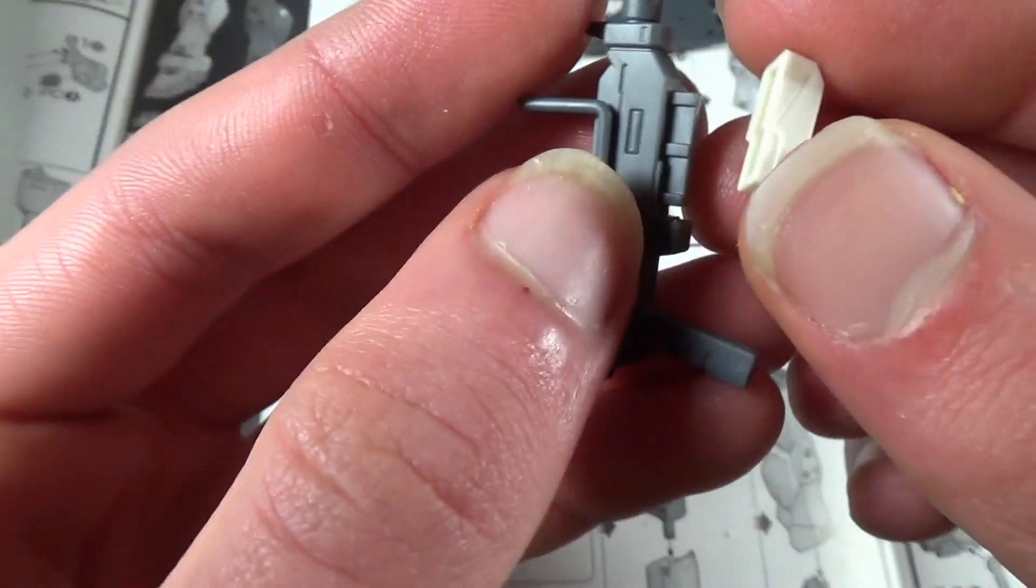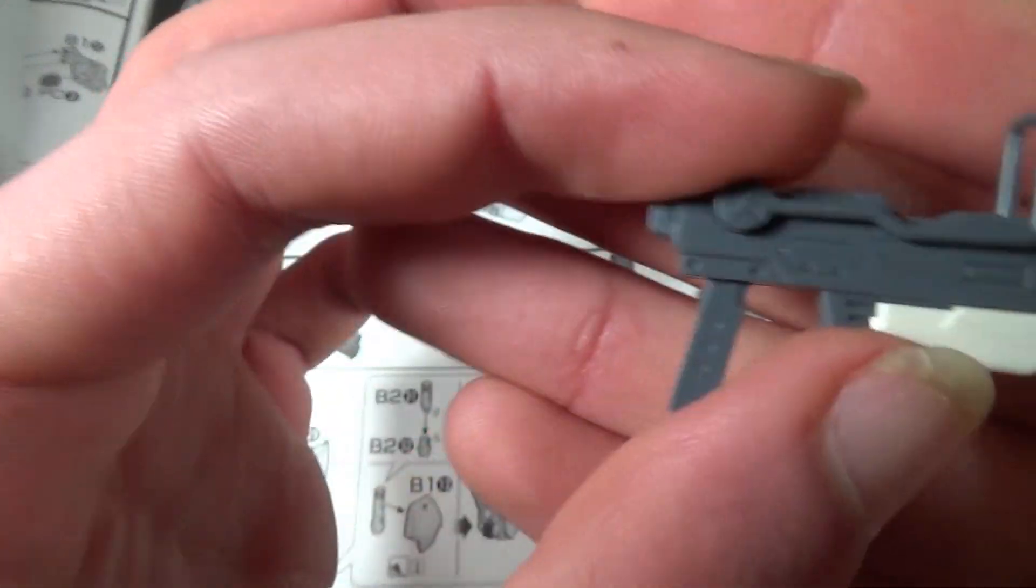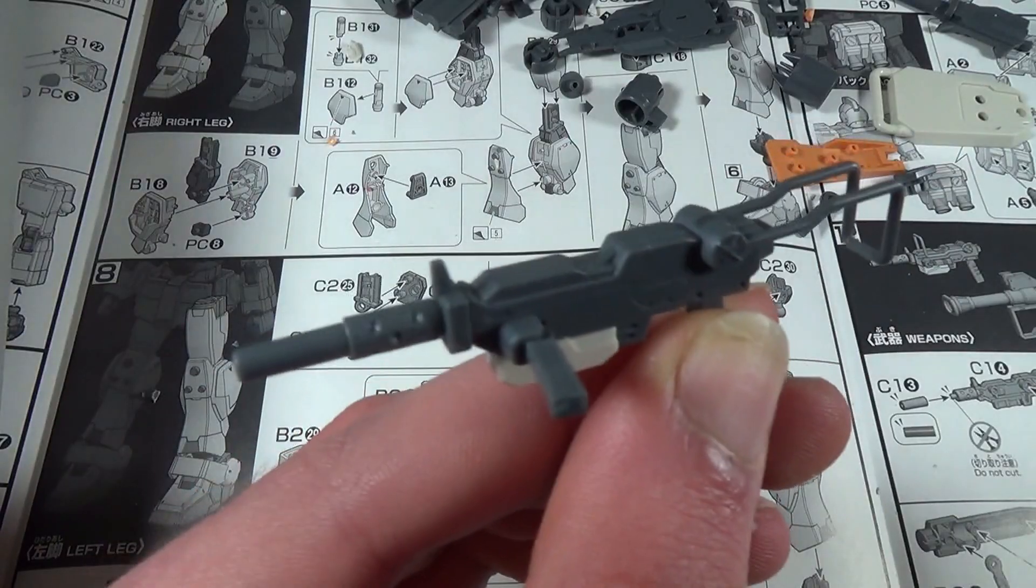And then we have one of those lovely ammo clips that I showed you earlier on the legs that goes down here. And I was really surprised to see this, because I truly thought when I was looking at the box, that this was one of those things you're going to have to paint. But no, that looks really good.